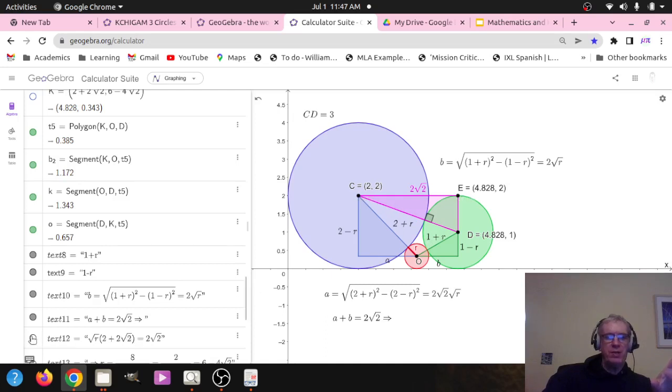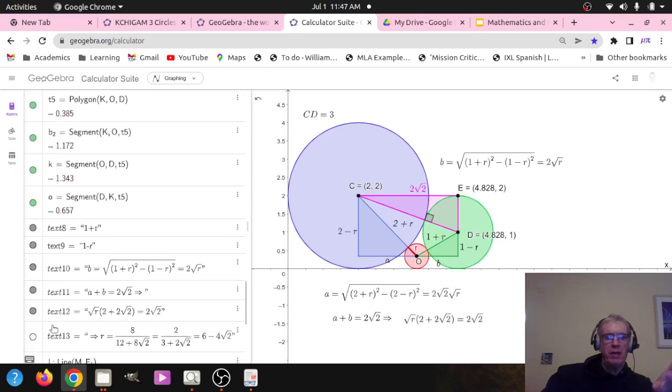And that implies that √r times (2 + 2√2) equals—so that, there it is. This is, I've factored out √r from a + b, and then I've got 2 + 2√2. So that gives me an expression for a + b, which is equal to CE, which is 2√2. So now I can go ahead and solve for r.